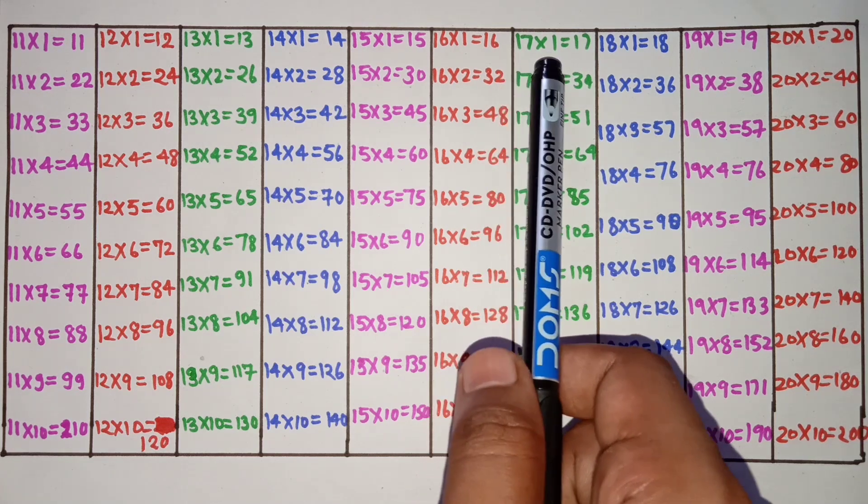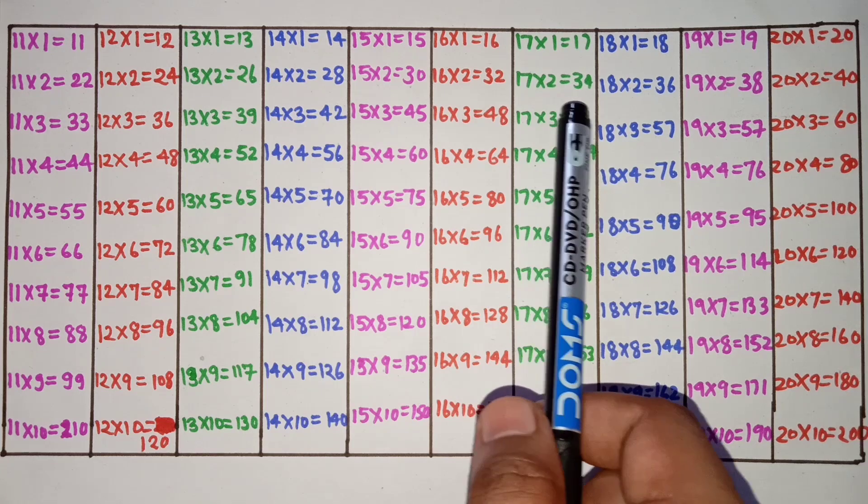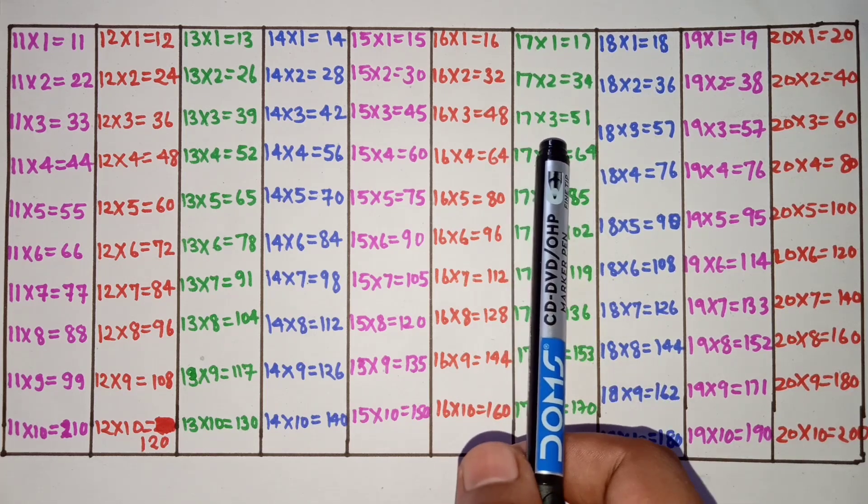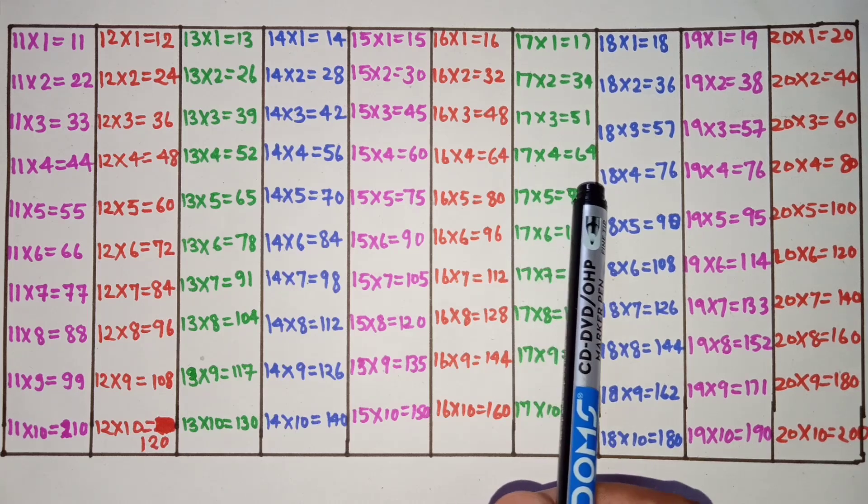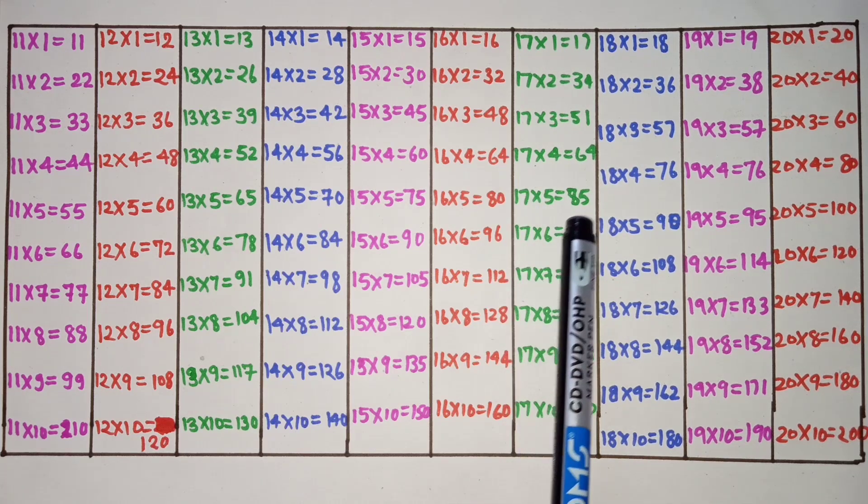17 ones are 17, 17 twos are 34, 17 threes are 51, 17 fours are 68, 17 fives are 85.